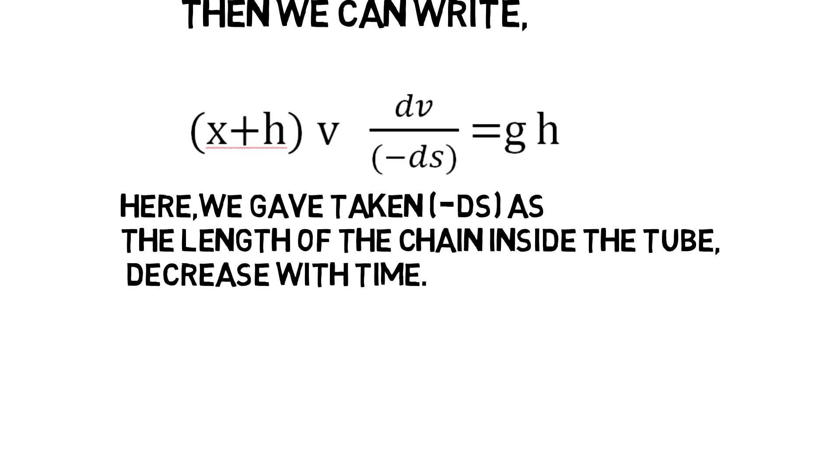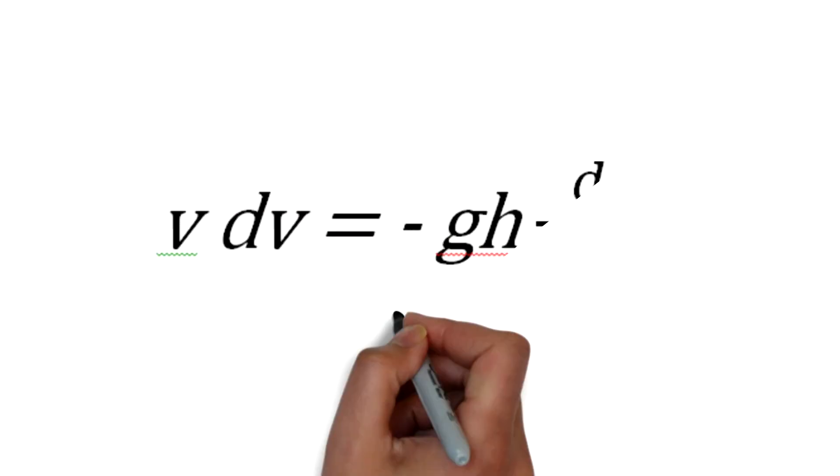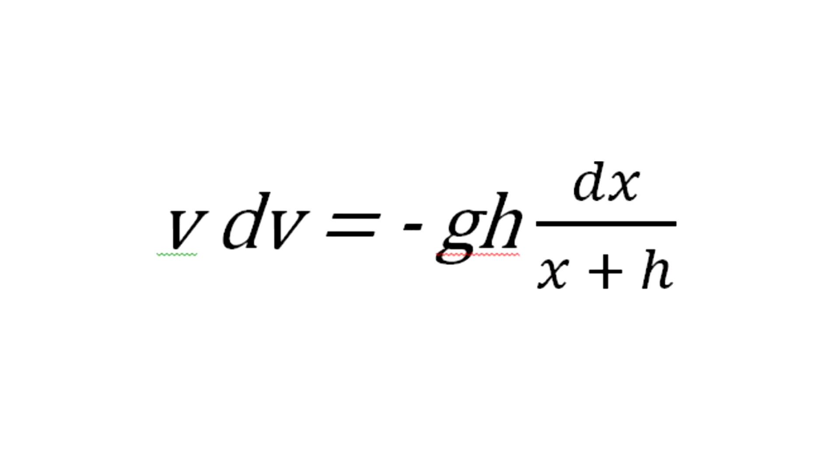Thus we can write (x + h) v (dv/ds) = gh. Here we have taken ds as negative because the length of the chain inside the tube gets decreased with time. So we can write v dv = -gh dx/(x + h).